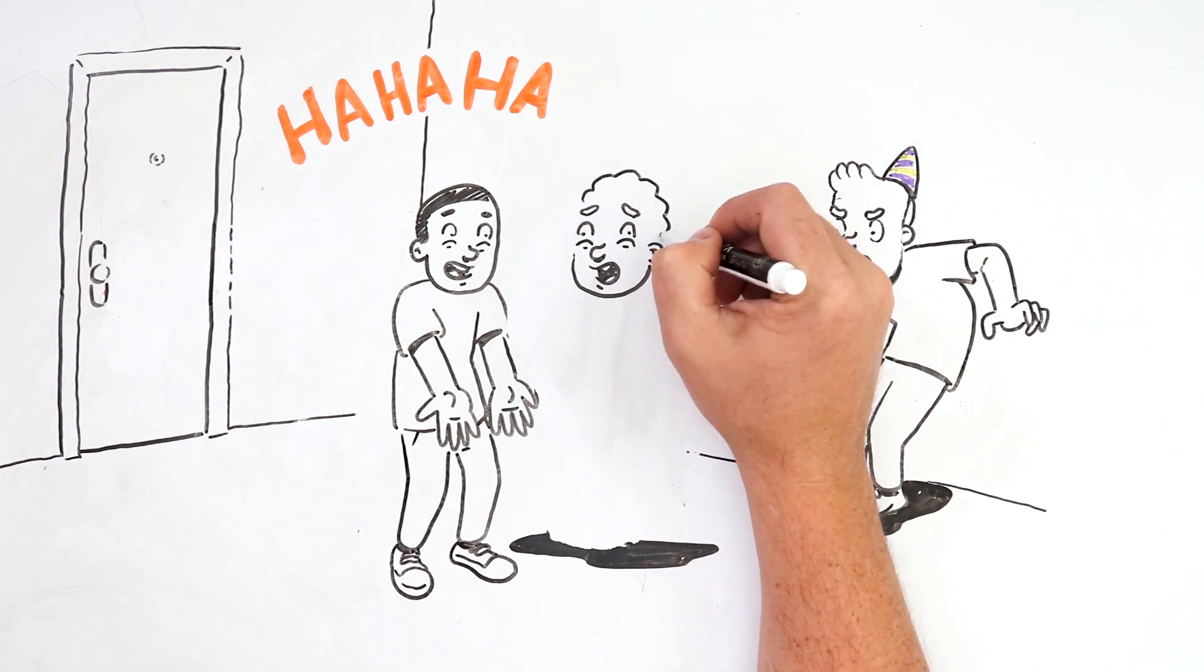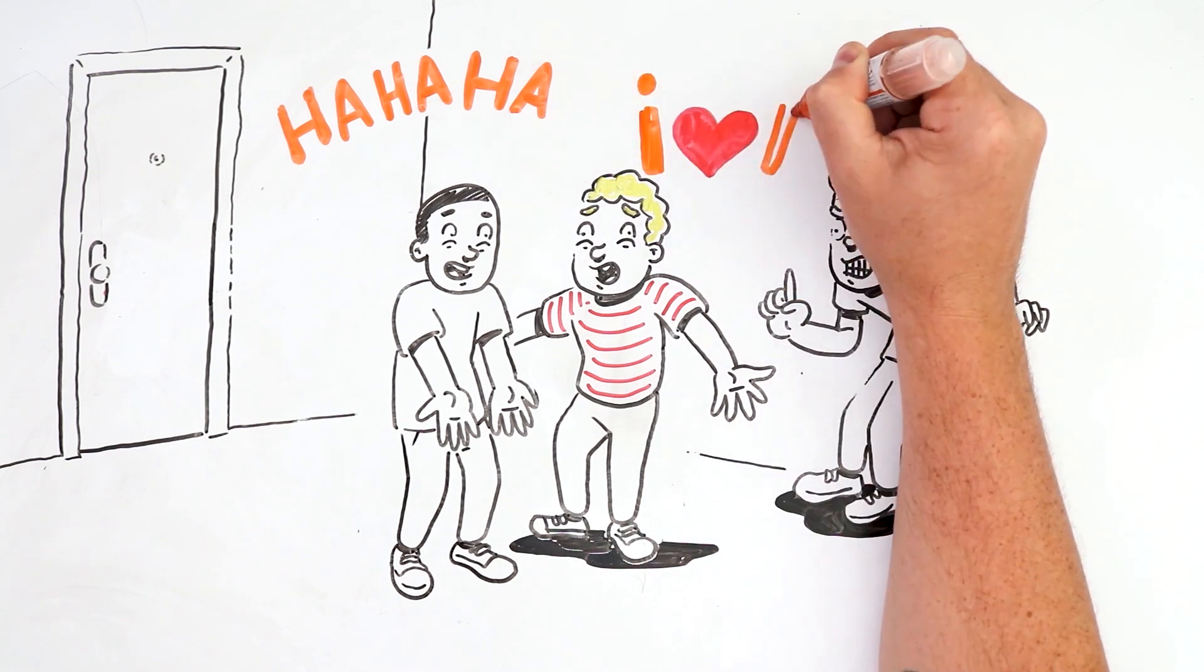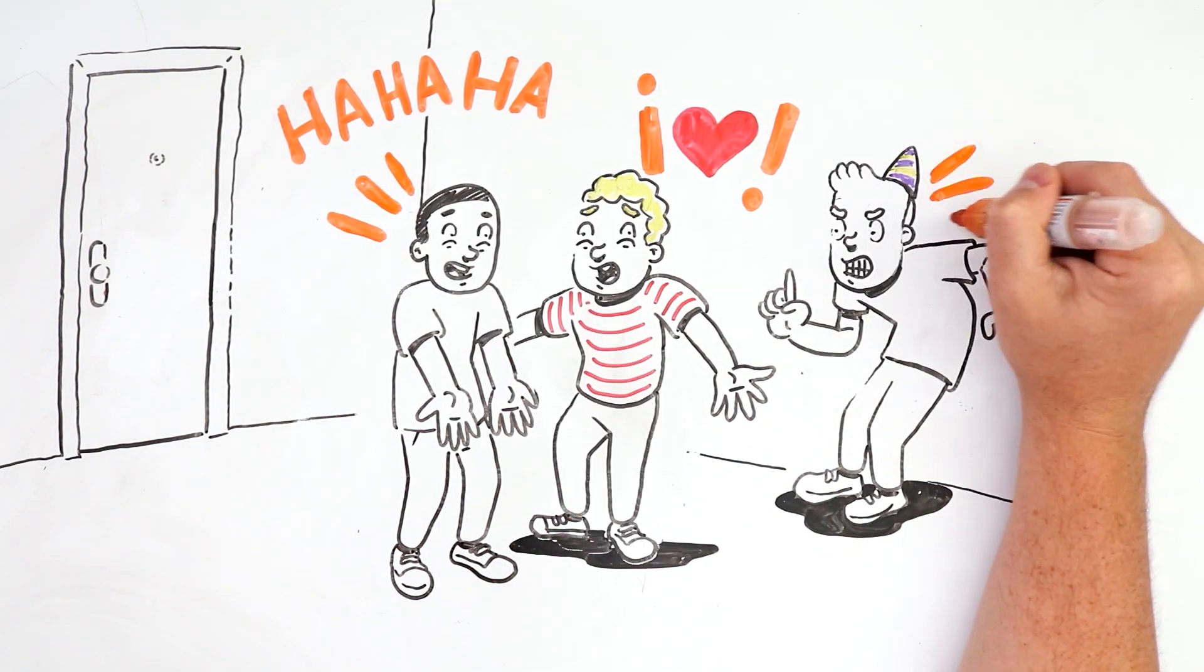Why should I have to choose between Sylvia and my friends? I still love her. I love her very much. But I also realized that I put my friends behind, and they're also an important part of my life.